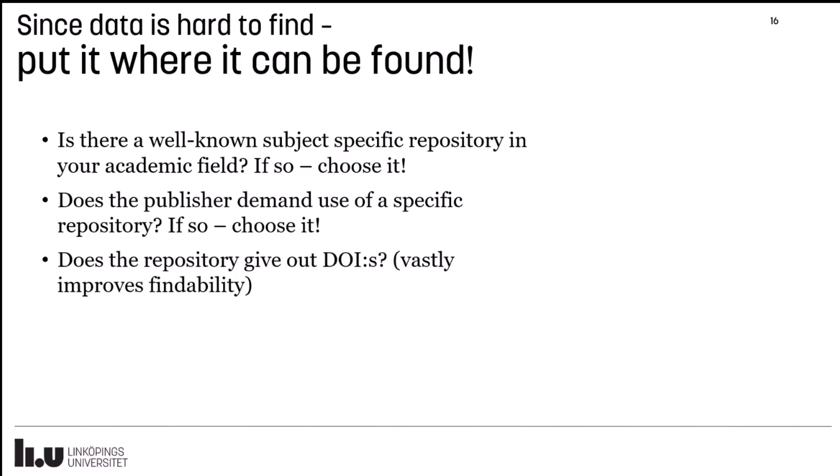One very important finding from our investigation — comparing where Linköping University researchers put research data according to mapping versus the questionnaire — was that it was very difficult to find data unless there was a DOI, a permanent link to the data. So if you want to put your data in a repository and it does not offer a DOI, think carefully, because you usually need to invest a lot of time to make data openly available. Having a DOI vastly improves findability and interoperability, and there is a connection between publications and data.